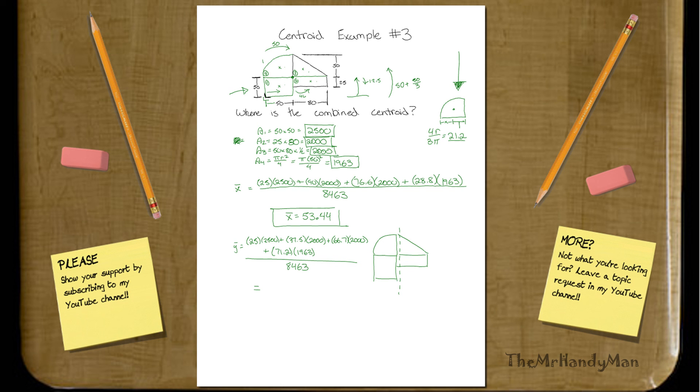If you work that out, let's see what that comes out to. 25, times, 2,500, plus, you have your 37.5, times, 2,000, plus, 66.7, times, 2,000, plus, 71.2, times, 1963. All over, 8, 4, 6, 3. And that comes out to be 48.5.